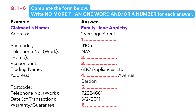My wife bought a vacuum cleaner there last month. Yes, Barden. Have you got the postcode for Barden? It's really similar to mine. Wait a moment. I'd better make sure I get it right. 4065. That's it. And what's the telephone number for ABC Appliances? 7232-4681. Good. Got that.